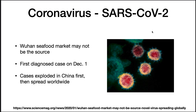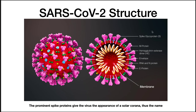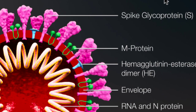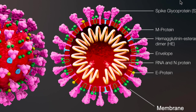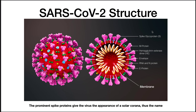In just a few months the virus has since spread around the world. SARS-CoV-2 is an envelope virus with a positive single-stranded RNA genome. The membrane is decorated with a number of proteins, with the spike glycoprotein probably being the most important for immunity. The prominent spike proteins give the virus the appearance of a solar corona, hence the name of this virus family.